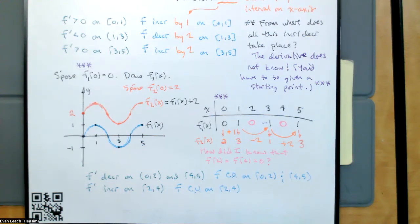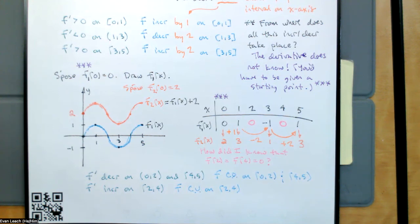It came from a very simple place: we know that when the derivative is positive, the function is increasing — that raises a question: by how much is the function increasing? If you're confused now, don't worry, that is normal and that is the correct answer. If you think everything makes sense, I assure you everything does not fully make sense yet.